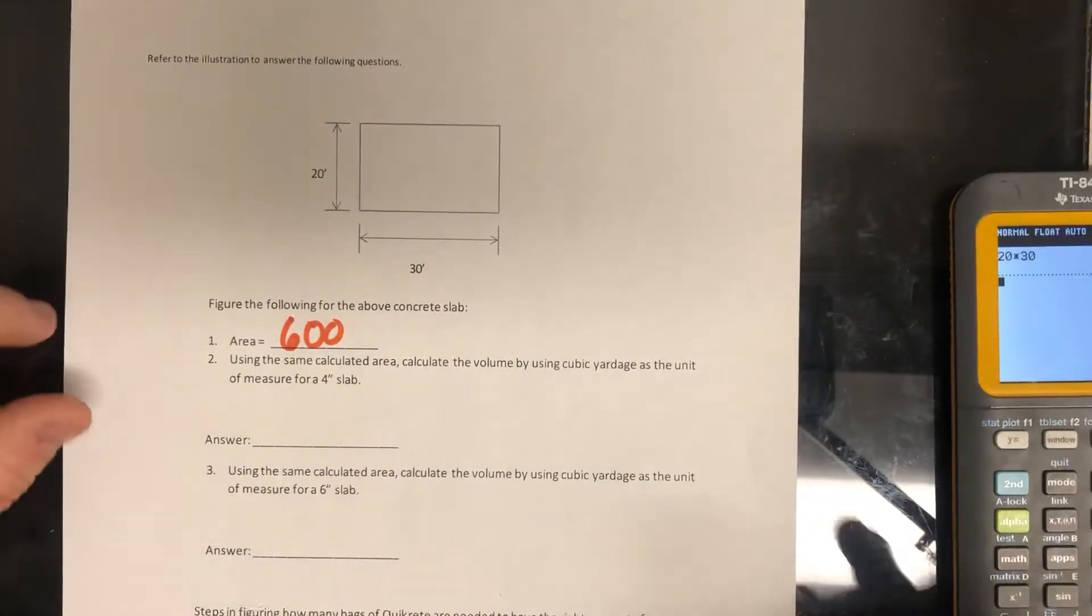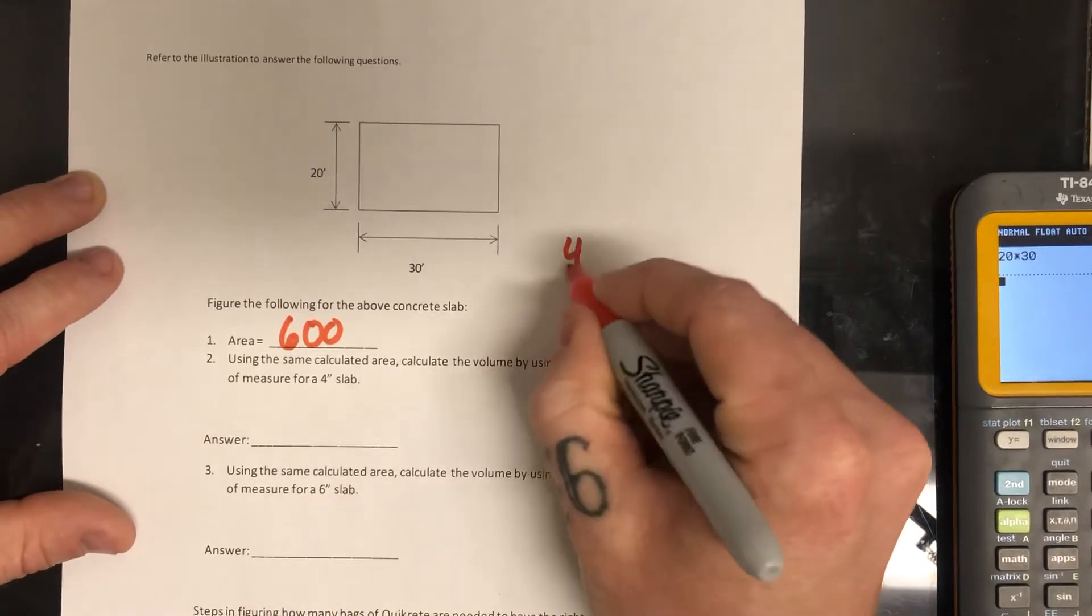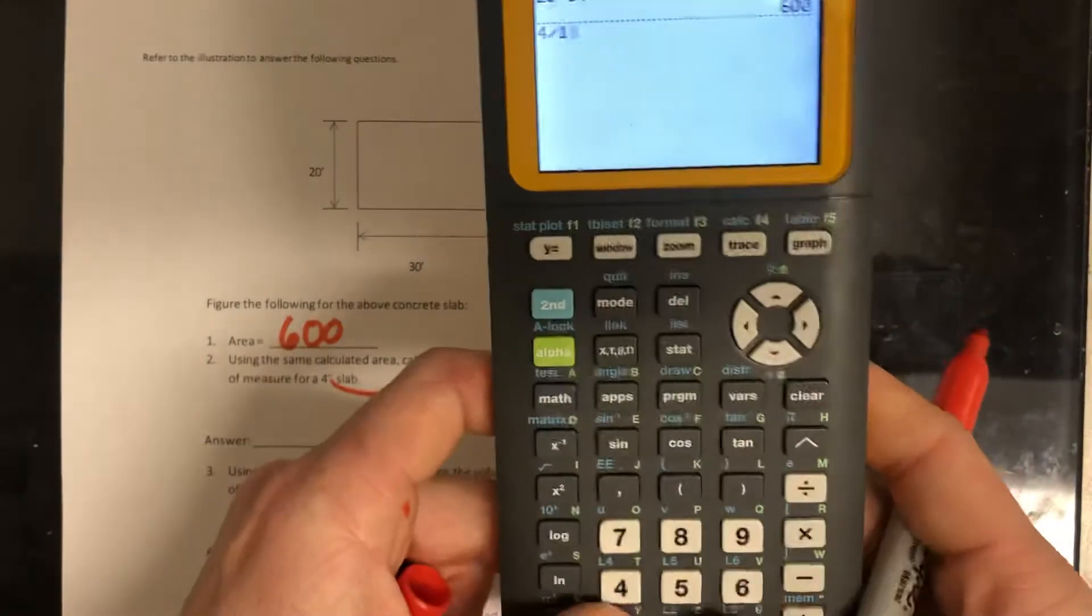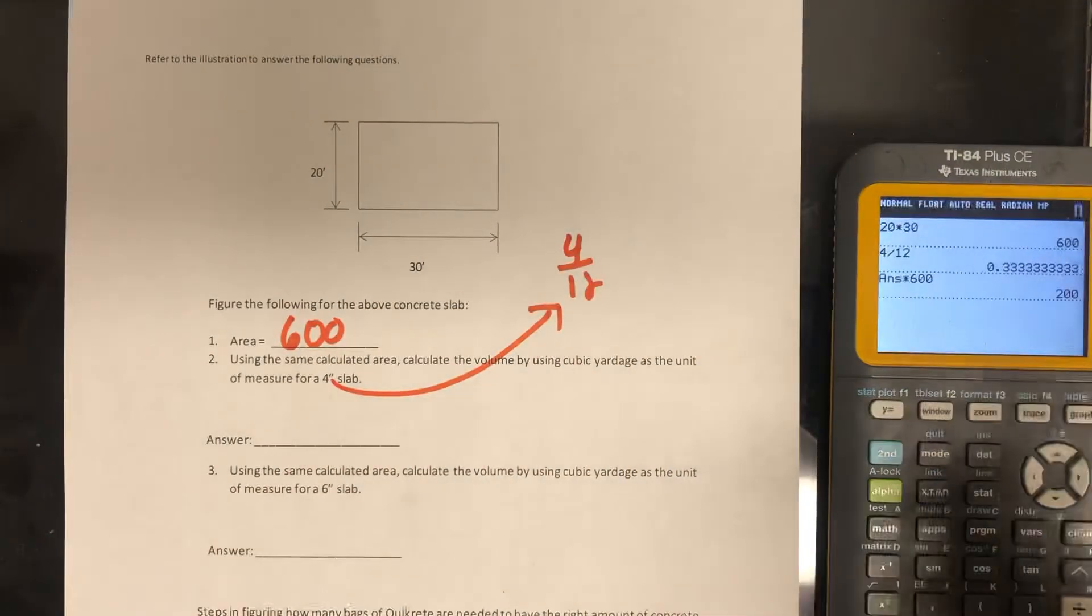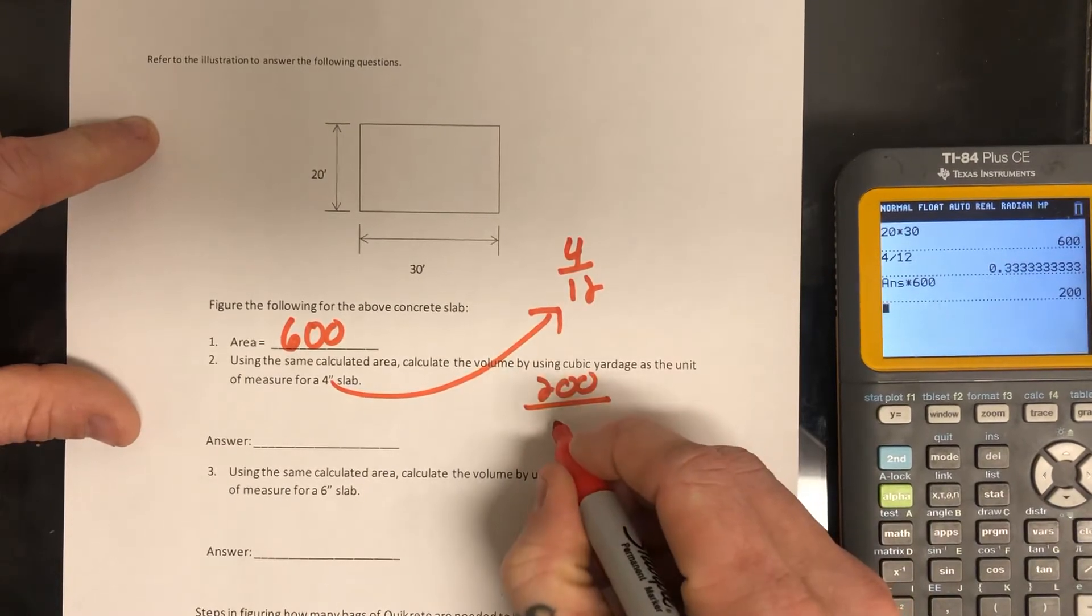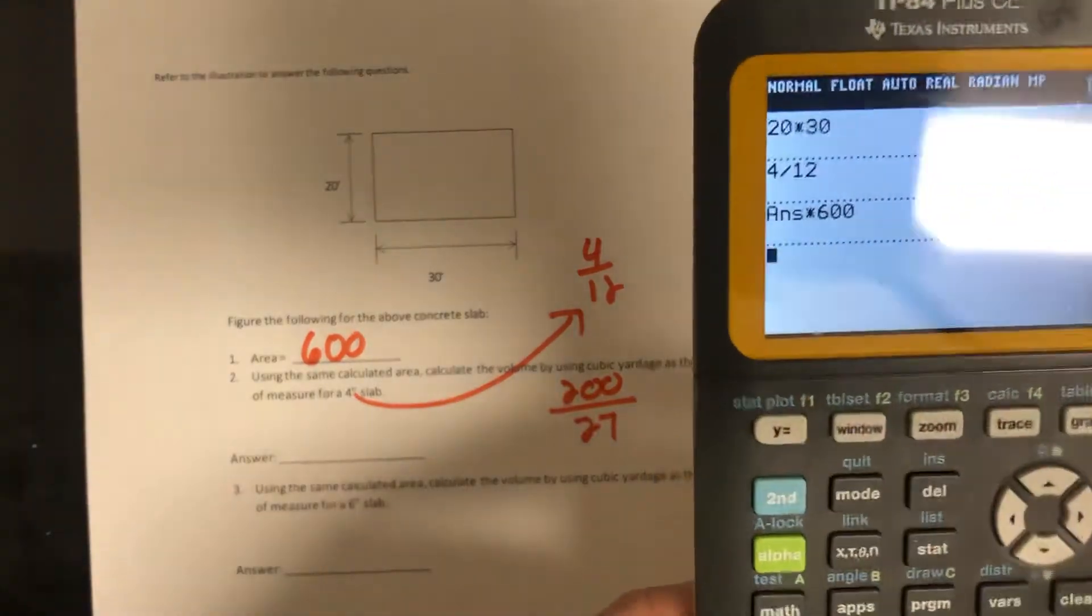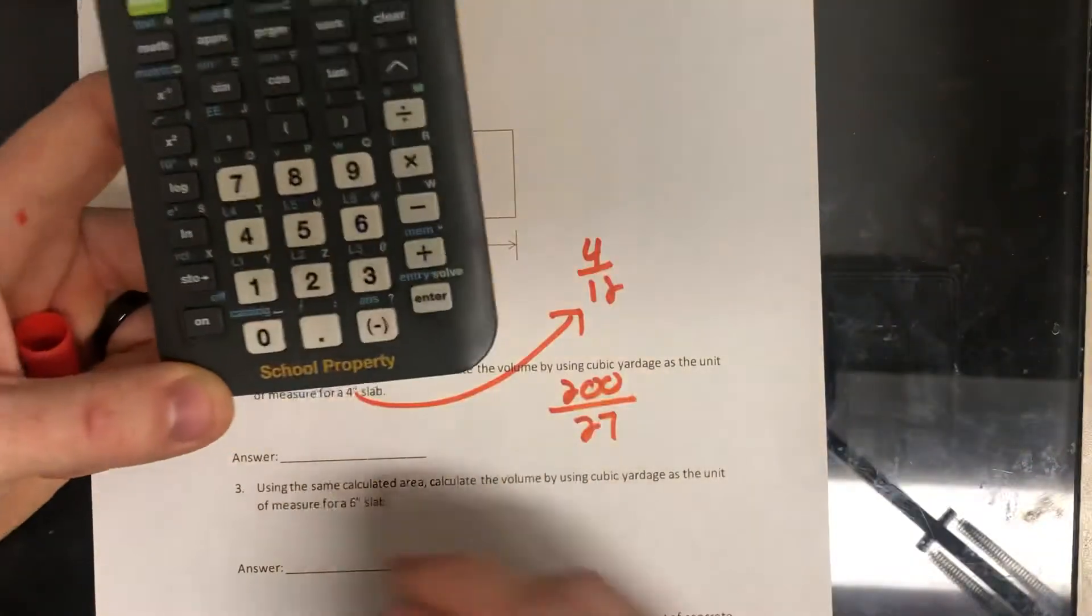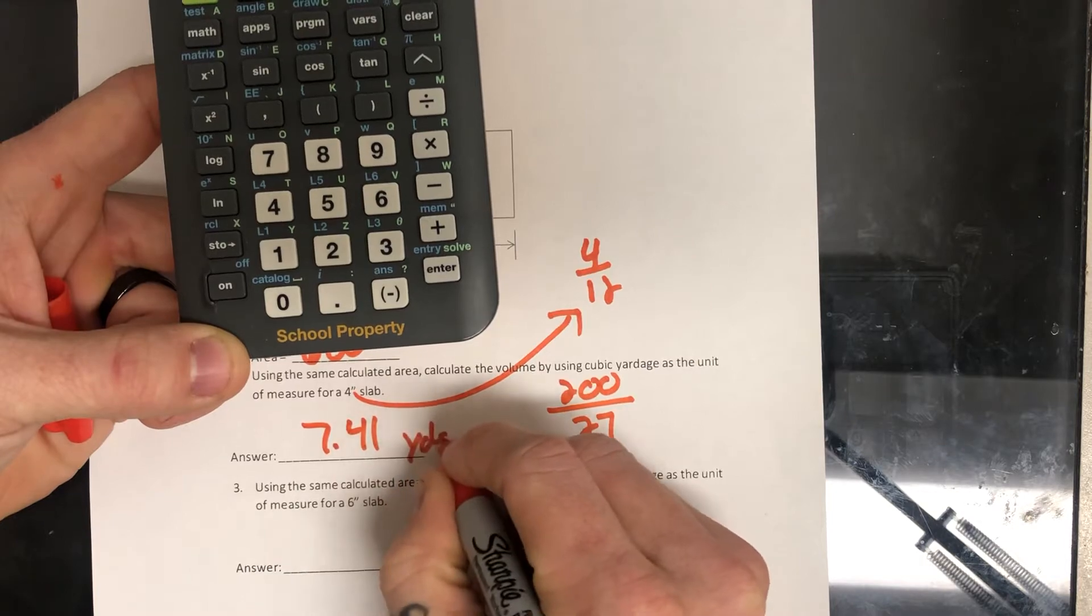And then it's a four inch thick slab. So we have to multiply this by four over 12. So four divided by 12 is one third times 600. So the volume is actually going to be 200. And we're going to divide that by 27 to find our cubic yardage. So divided by 27, 7.41 yards cubed.